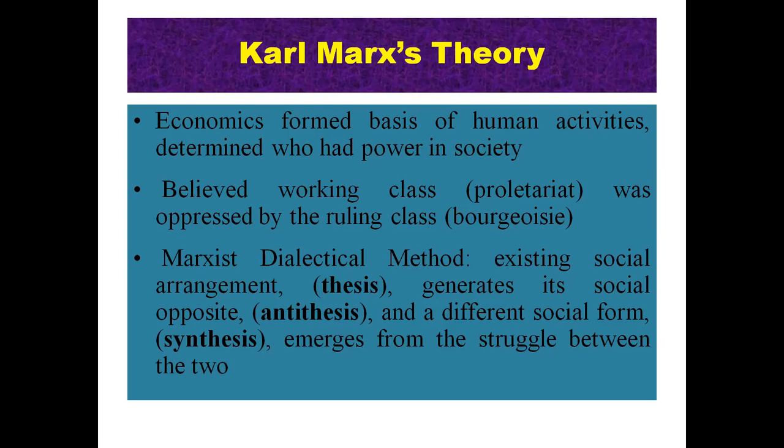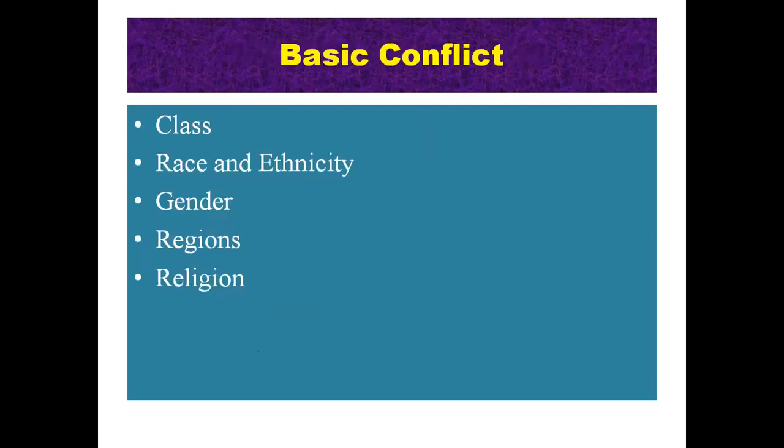According to the Marxist dialectical method, the existing social arrangement — known as the thesis — generates its social opposite, the antithesis, and a different social form called the synthesis emerges from the struggle between the two classes. The basis of conflict includes: class or socioeconomic status, race and ethnicity, gender (male and female), and various regions and religions.